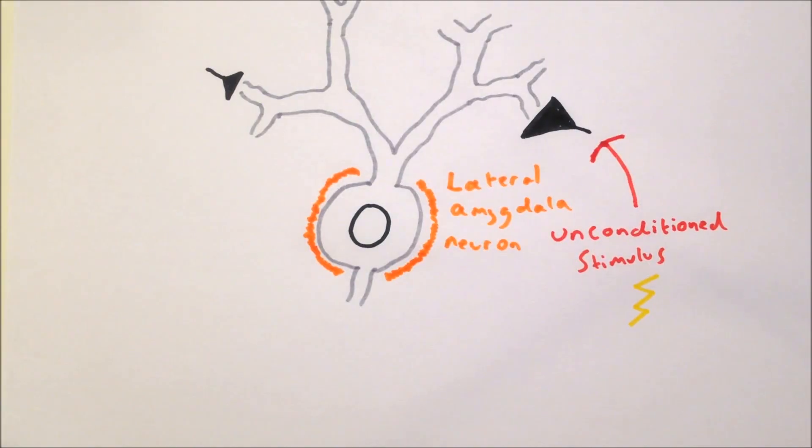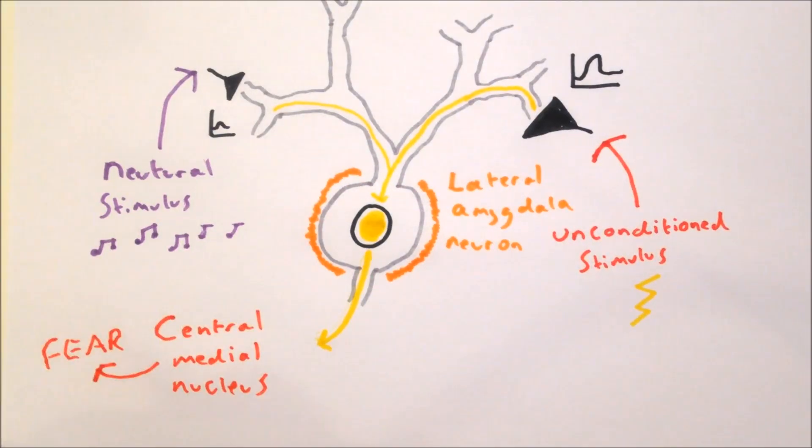However, when the neurons encoding the shock and the neurons encoding the sound fire together, synaptic plasticity occurs like we've seen in the previous videos.